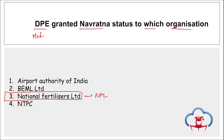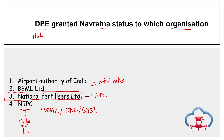Airport Authority of India and BEML have Mini Ratna status. NTPC has Maharatna status. Other Maharatna companies include ONGC, Steel Authority of India Limited, Bharat Heavy Electricals Limited, IOCL, and Coal India Limited. Mini Ratna companies include Airport Authority of India, BEML, Bharat Dynamics Limited, BSNL, and Antrix Corporation Limited. NFL (National Fertilizers Limited) was upgraded from Mini Ratna Category 1 to Navratna status.